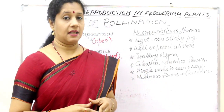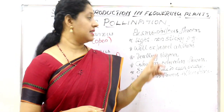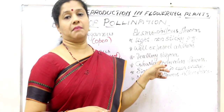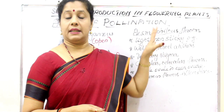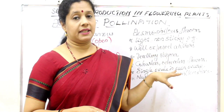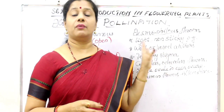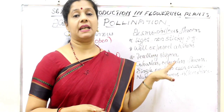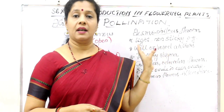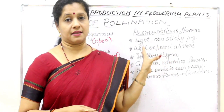The corn cob or tassel represents the style and stigma. It is a wind-pollinated plant, and wind pollination mainly happens in grass plants.